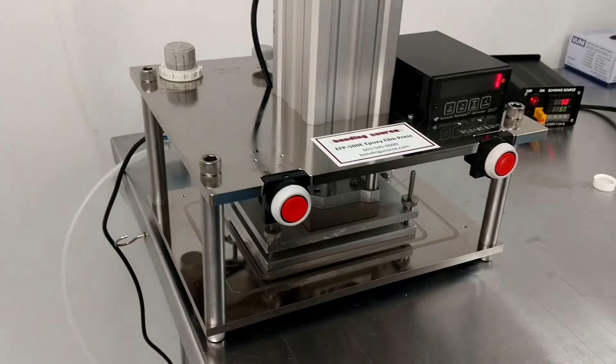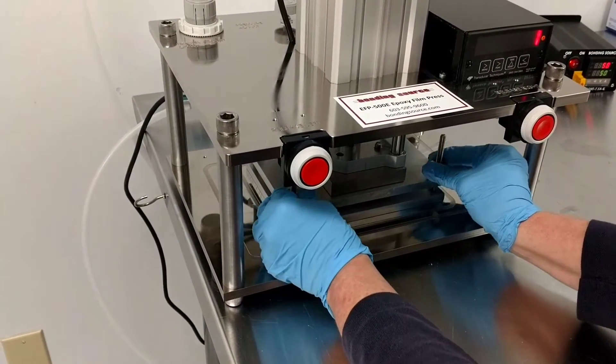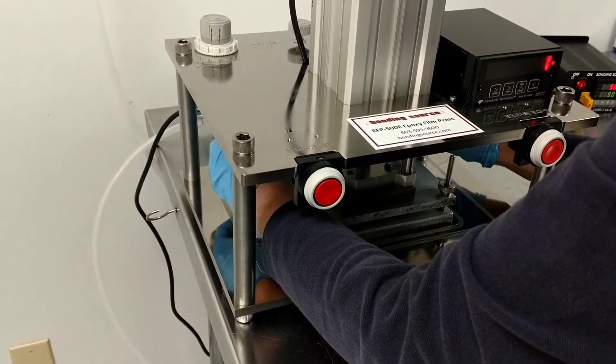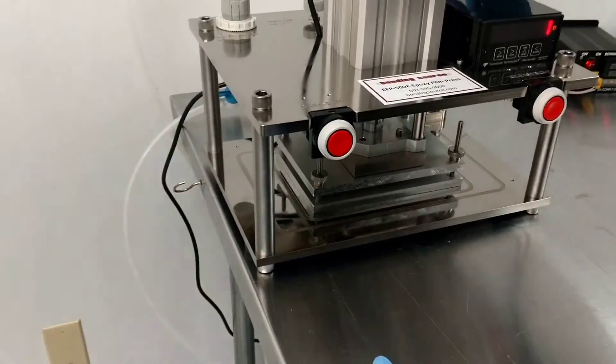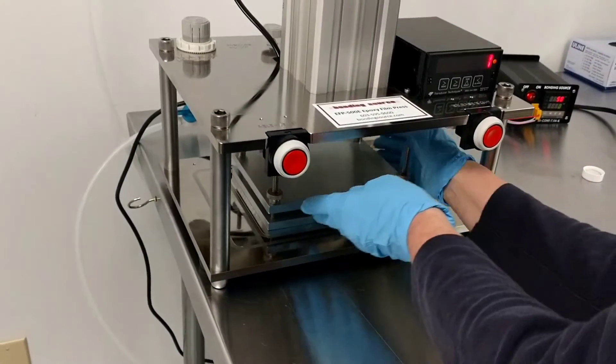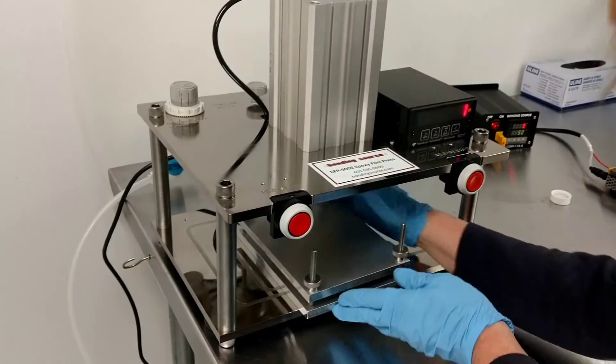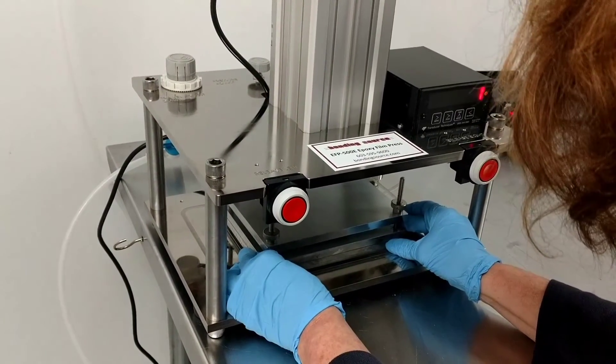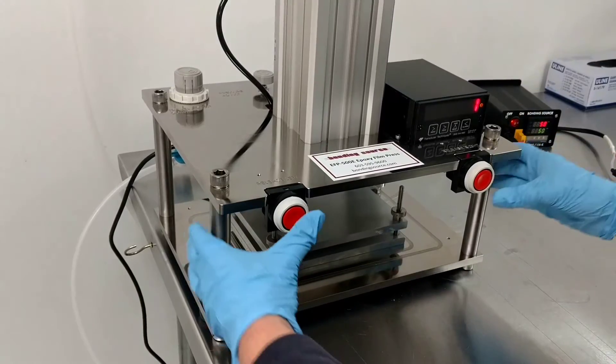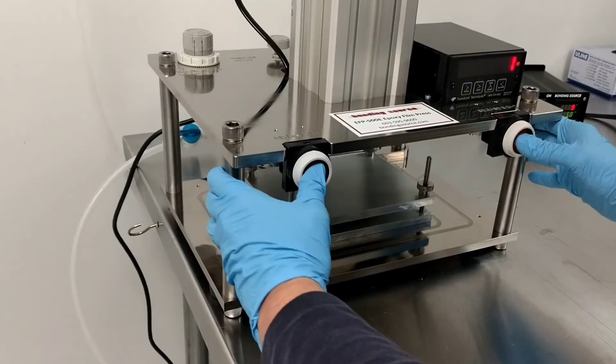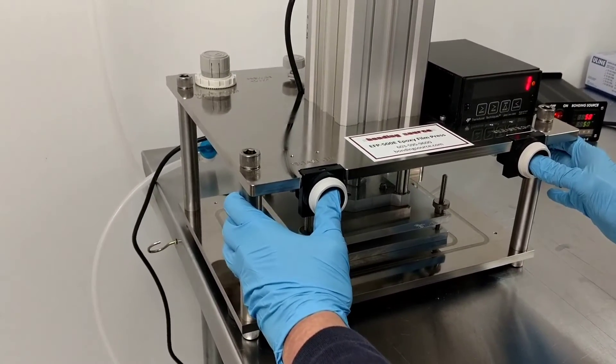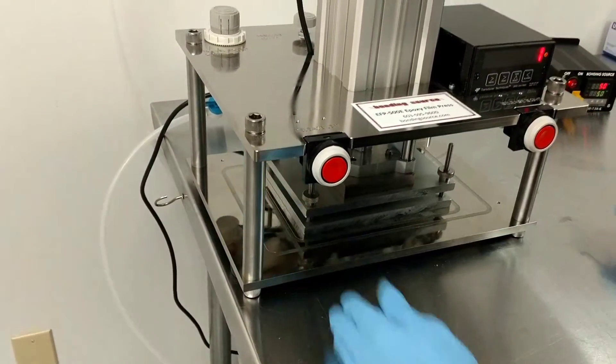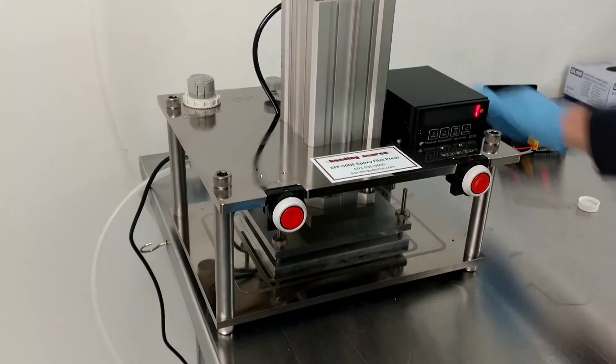Once that's down, now we'll tighten the screws just finger tight so they don't move. And we're going to release it and then rotate the fixture 180 degrees. Come down one more time. Make sure everything stays tight. Then you can release it up.